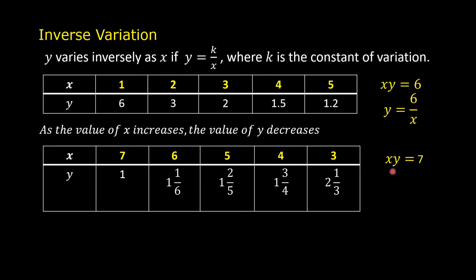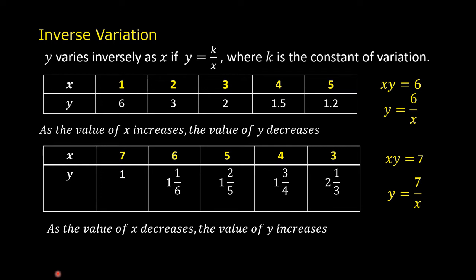If you solve for y, you divide both sides by x, you get y is equal to 7 over x. This is in the form y equals k over x, where k is equal to 7. Notice also that in the table, as the value of x decreases, the value of y increases. In an inverse variation, as the value of x increases, the value of y decreases, and as the value of x decreases, the value of y increases.